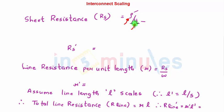That means there is no change due to scaling on Rs. So Rs' would be equal to Rs. Very straightforward. We also know that line resistance per unit length, small r, is given by sheet resistance upon the width of the interconnect.